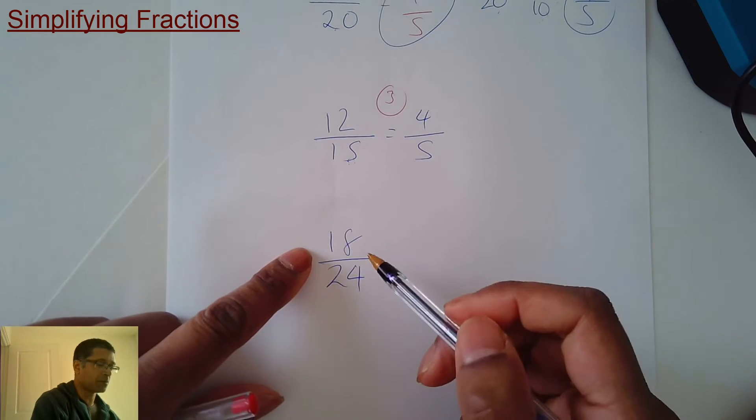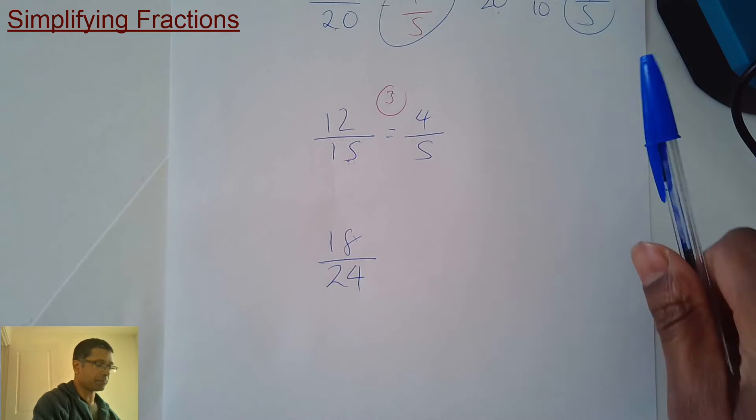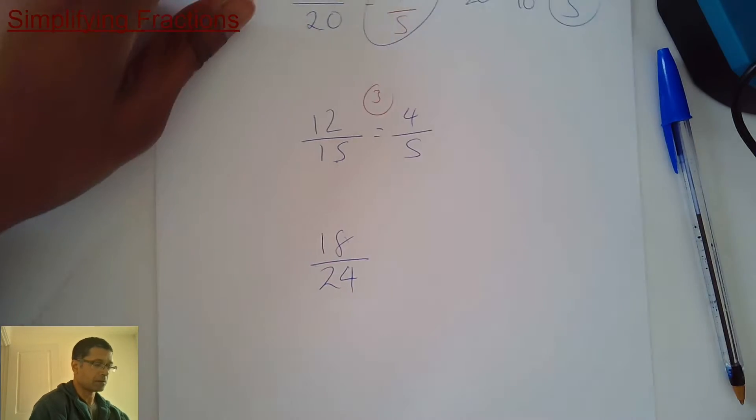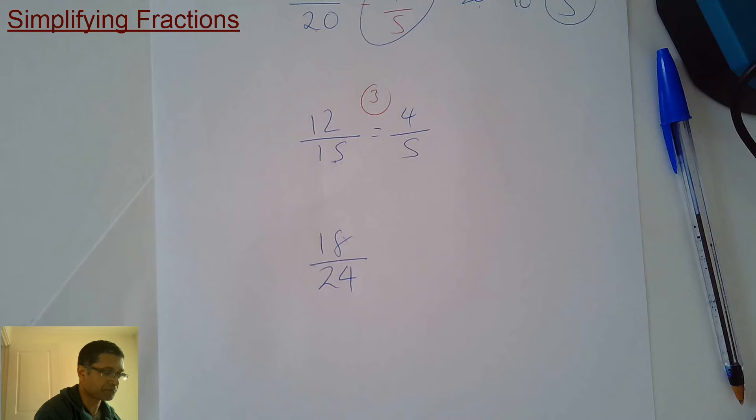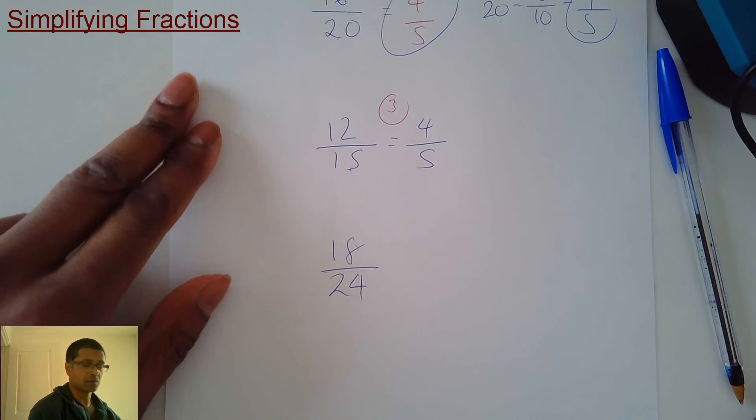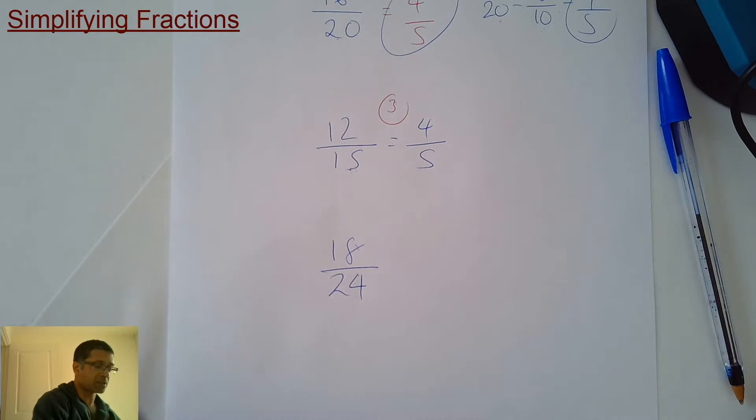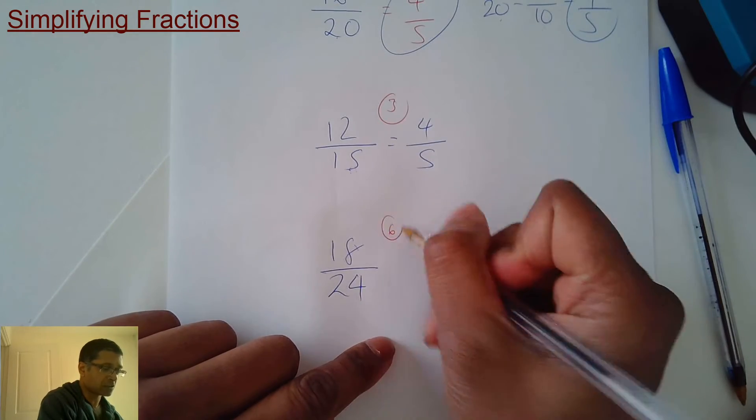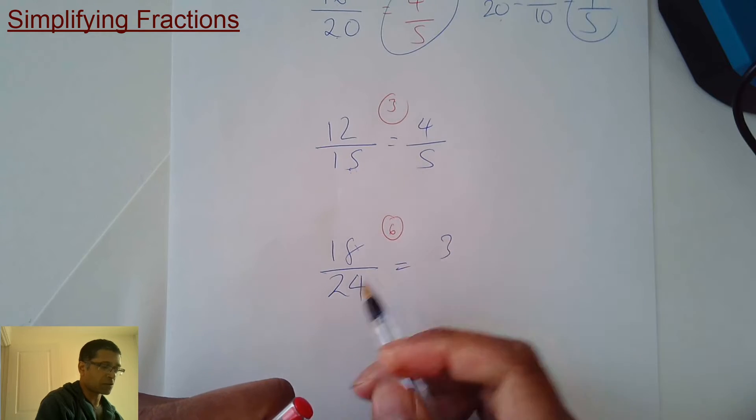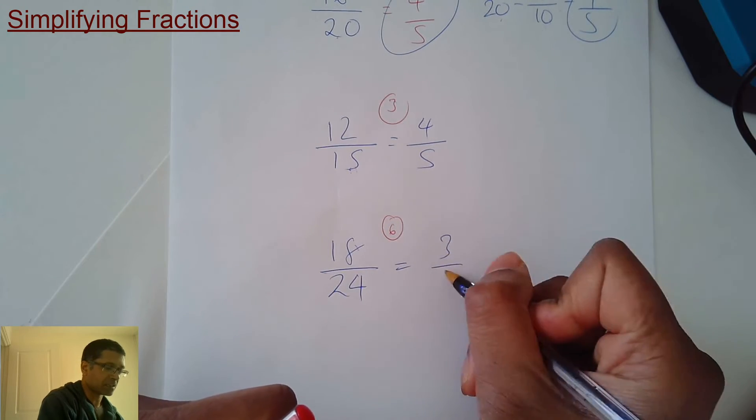Can you think of a times table that's got 18 and 24 in it? Some of you are thinking, well, 2 times table. Some of you might be saying 3 times table. Or even 6 times table. That's the biggest number you can think of, 6 times table. So 18 divided by 6 is 3. 24 divided by 6 is 4.